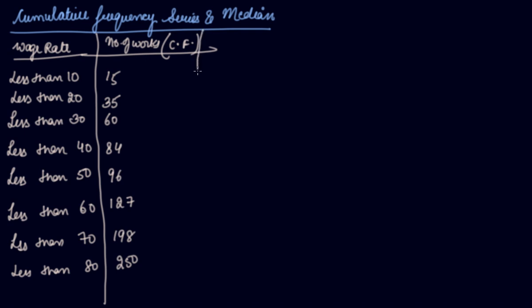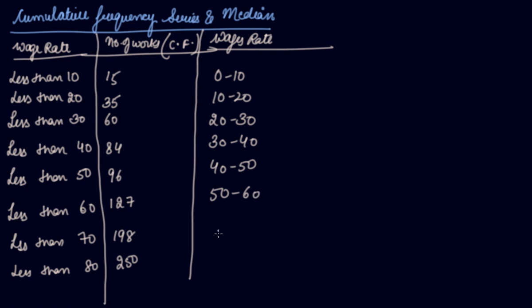Now convert it into the original series. That is your classes, that is wage rate. So you simply can convert it as 0 to 10, 10 to 20, 20 to 30, 30 to 40, 40 to 50, 50 to 60, 60 to 70, and less than 80 means 70 to 80.